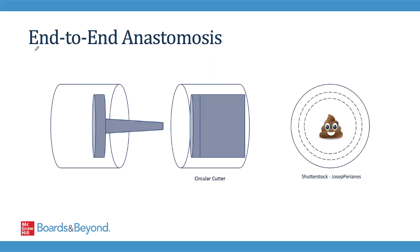Another technique used to restore intestinal continuity is the end-to-end anastomosis. You'll see this done in procedures involving a connection created low in the pelvis that's difficult to reach ergonomically. A proximal loop of intestine is cinched around a free anvil that carries the stapler load. A distal portion of the intestine is sealed off using something like a linear stapler. A circular cutter is then advanced through the anus and positioned right before the tissue. A needle is advanced through the circular cutter and combines with the free anvil. The two stapler loads are fired and a cut is made on the inside portion of the second staple line, allowing intestinal contents to flow through the new connection.